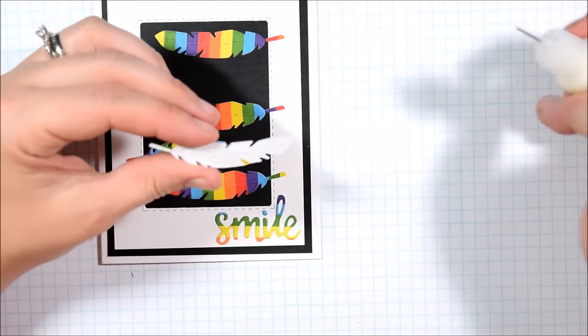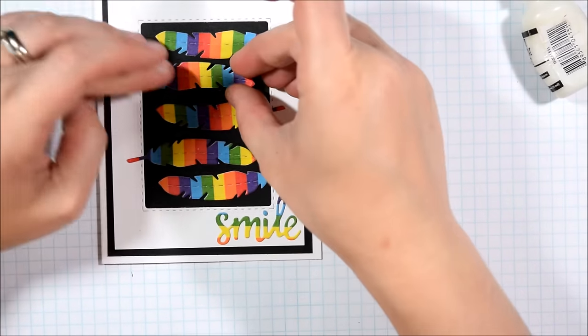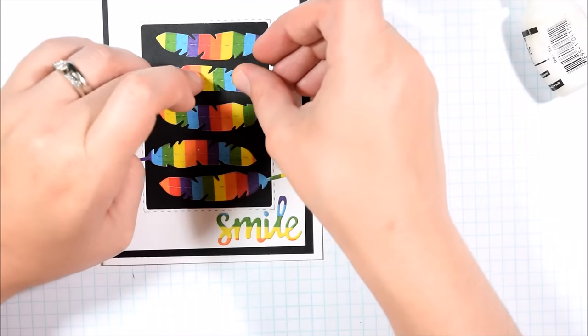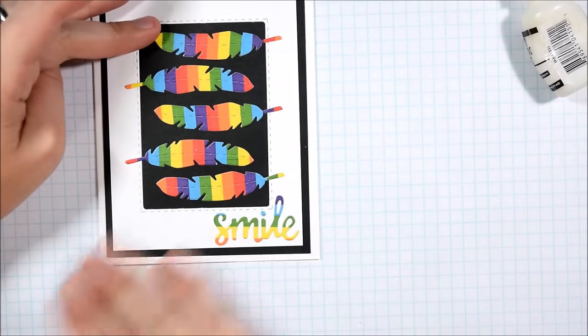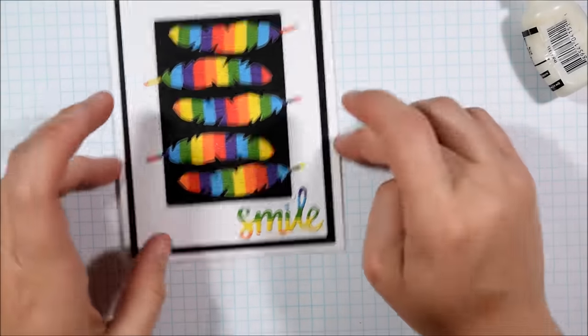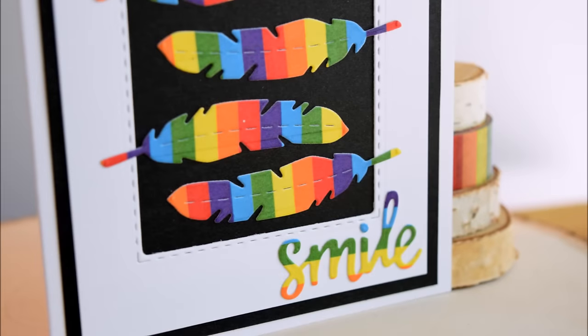If you wanted to add some dimension to something so thin like the smile die cut, my suggestion would be to die cut the smile out of some craft foam and adhere those layers on.